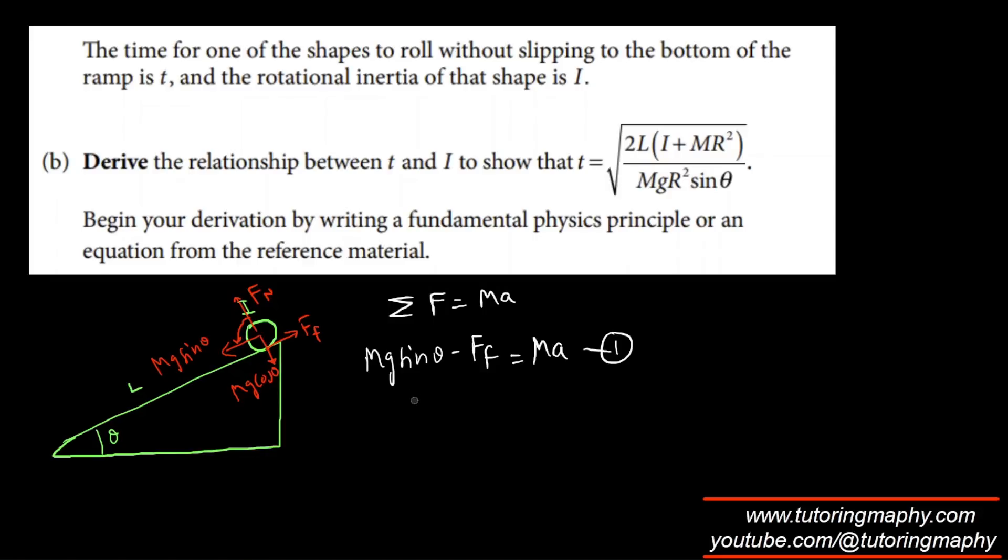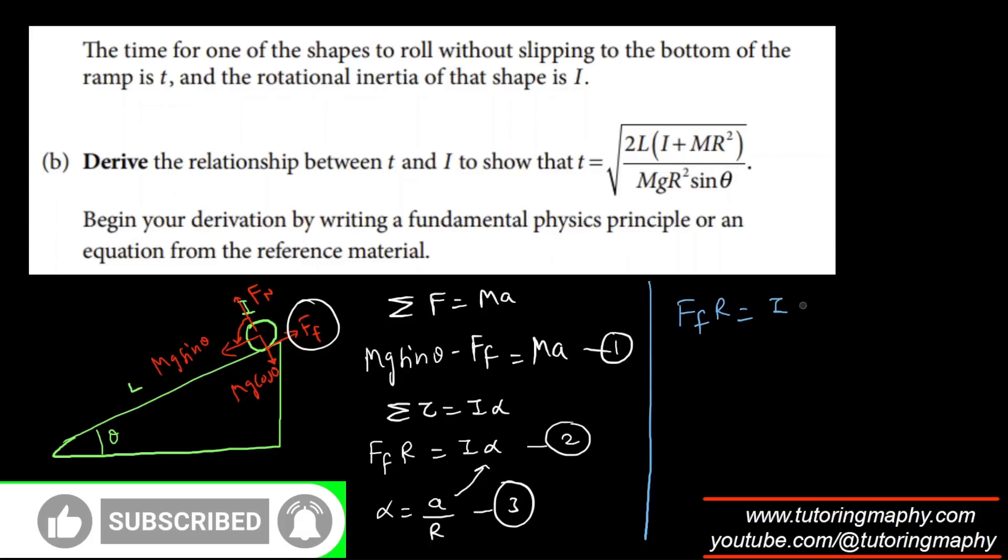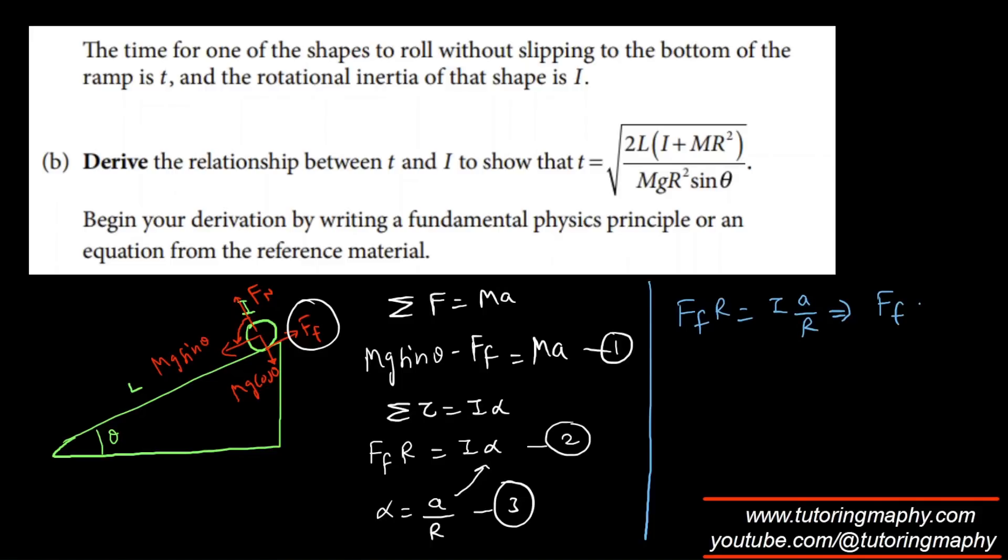And the next equation will be the torque equation. Total torque is I alpha. Total torque is only because of the friction. So FF times R equals I alpha. And the third equation is alpha equals A over R. I'm going to put alpha over here so that everything comes in terms of this. So the second equation will become FFR equals I times A over R. Dividing both sides with R, FF equals IA over R squared. That's the first equation.